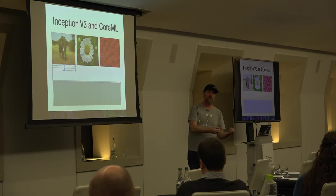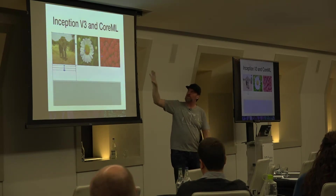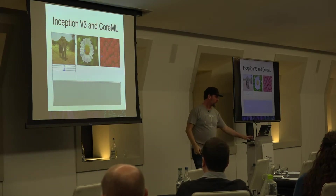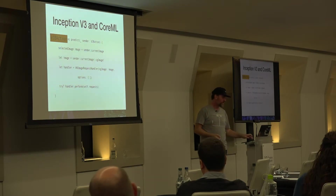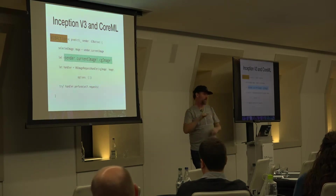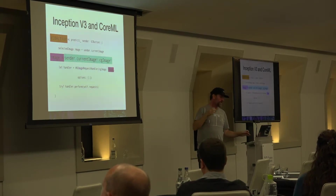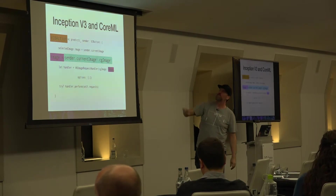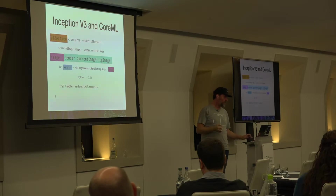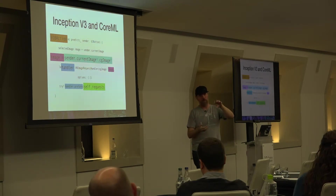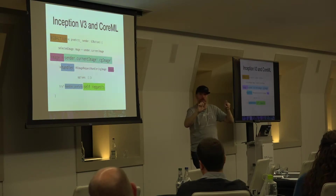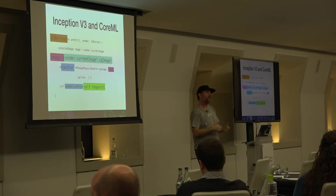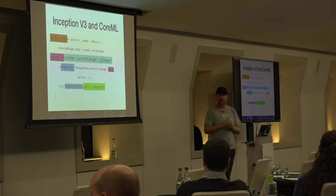The result handler method gets results back. Depending on the result, I take the confidence — the percentage for the recognition — and the identifier, for example 'African elephant'. Then I write the label and it's done. For the button click, it's an IBAction. When I click the button, I call the predict method which takes the clicked image, adds it to a request handler, and performs the requests. The handlers update the text on the app.